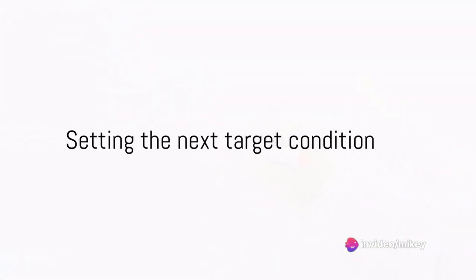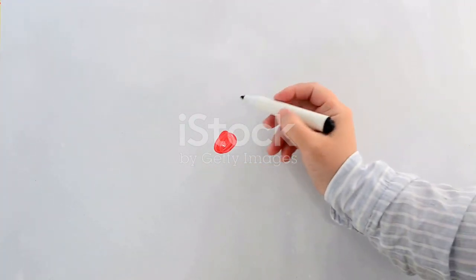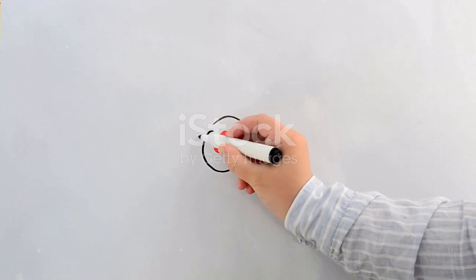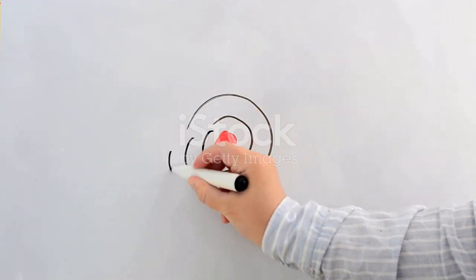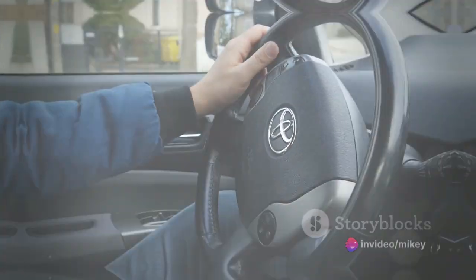The third step is to set the next target condition. Define specific, realistic targets that indicate a significant improvement from your current state. Remember to break down larger goals into smaller, more manageable targets.